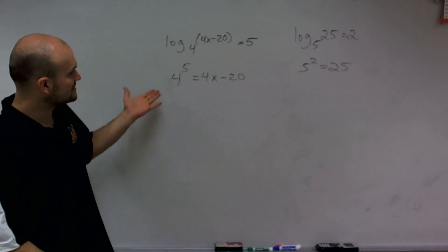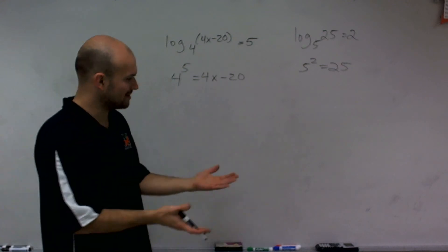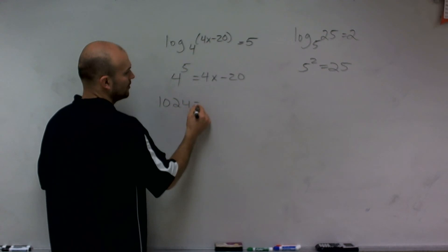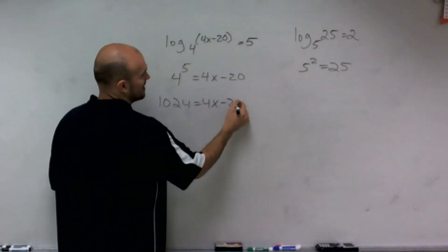So now, to solve this, I have to raise 4 to the fifth power. So if I look and calculate it, 4 to the fifth power is 1024 equals 4x minus 20.